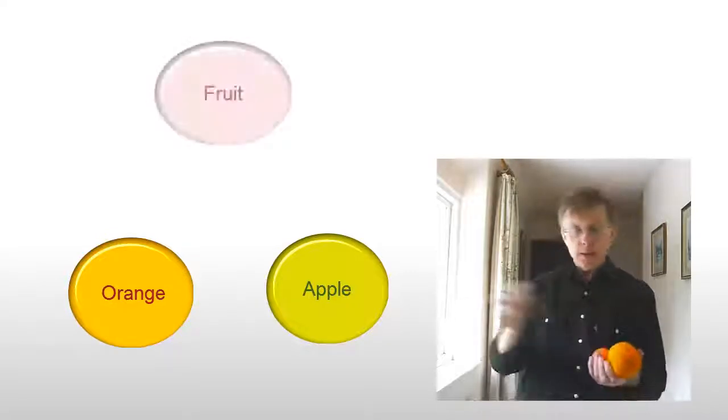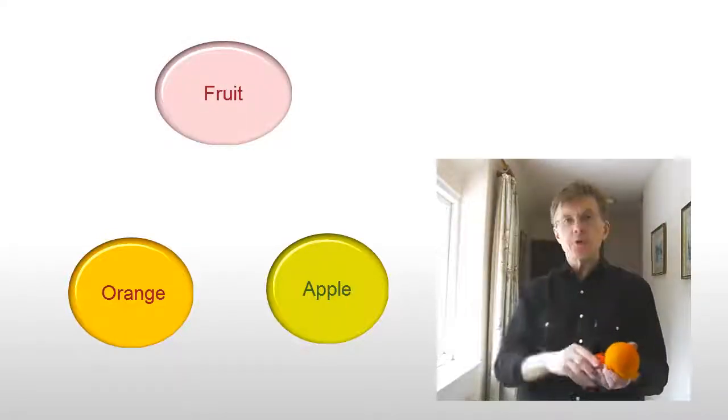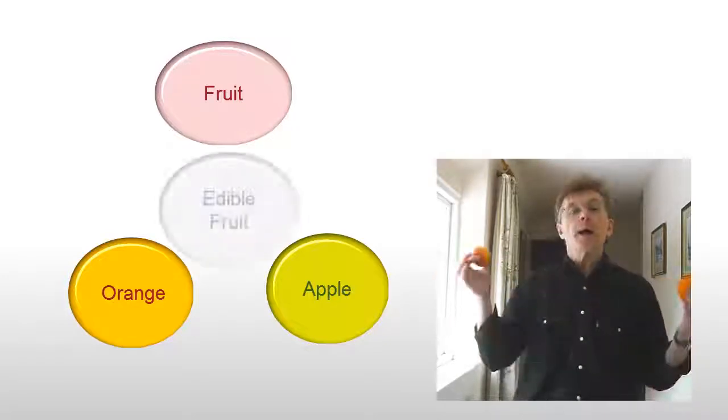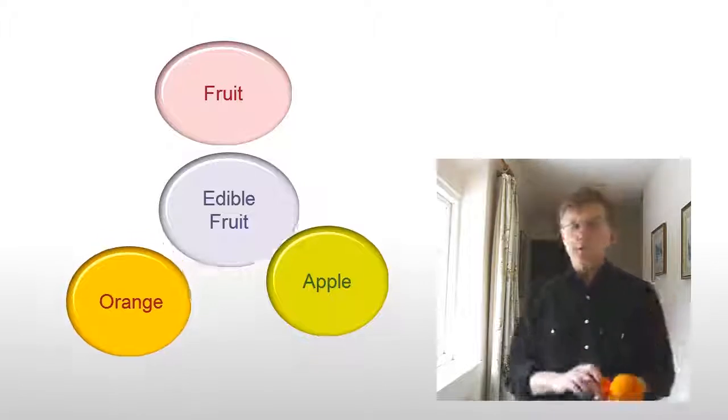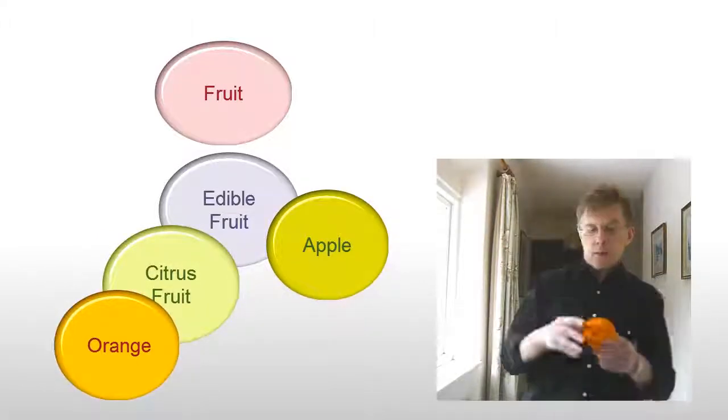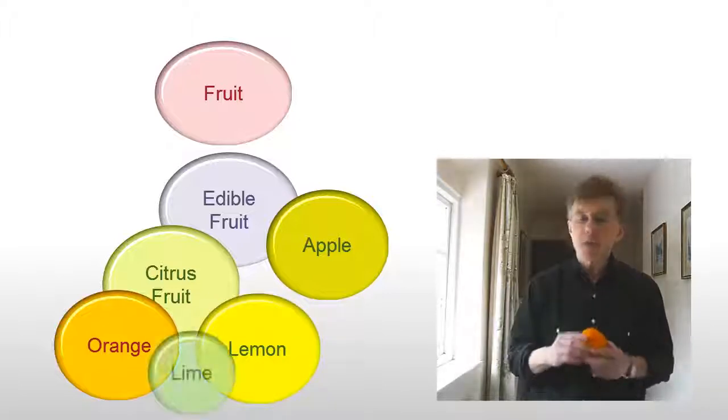And you could have gradations from the fruit to the apple and the orange. You could have an edible fruit which would have certain common characteristics, then you could have a citrus fruit and that would have common characteristics in common with lemons and limes and so on.